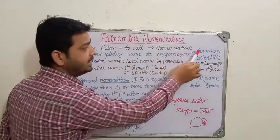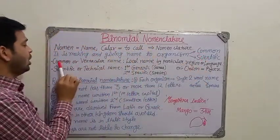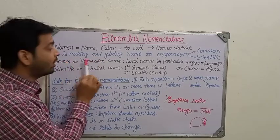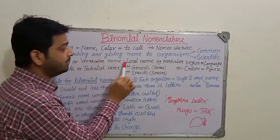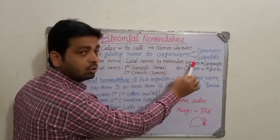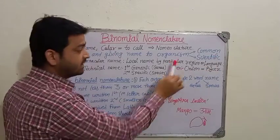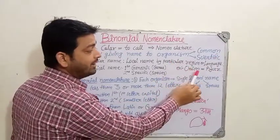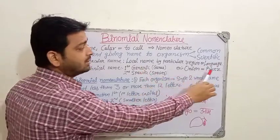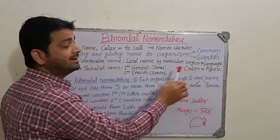A name may be common or scientific. The common name is also known as the vernacular name — that is, the local name used in a particular region, locality, or language. For example, onion is also known as 'piaz' in India, so 'piaz' is the local or vernacular name, whereas 'onion' is the English name.